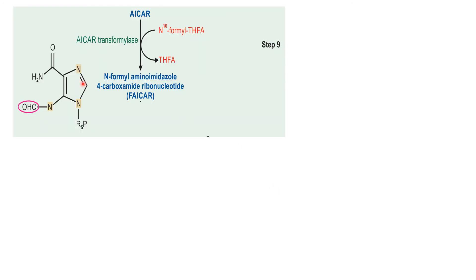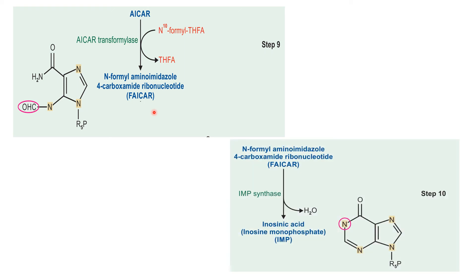The final atom of the purine ring, C2, is obtained from N10-formyl tetrahydrofolate. The formyl group is transferred onto AICAR by the enzyme transformylase, converting AICAR to FAICAR. The final reaction of the purine biosynthetic pathway is catalyzed by cyclohydrolase (IMP synthase), which closes the purine ring with elimination of a water molecule. The end product is IMP — inosine monophosphate — the first purine nucleotide formed.